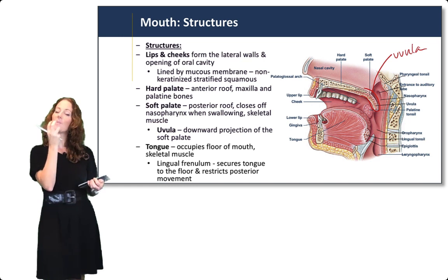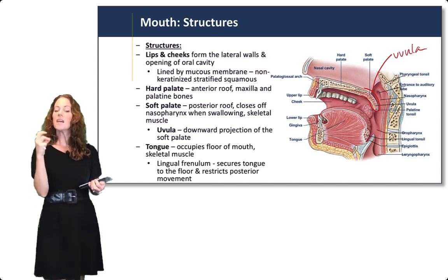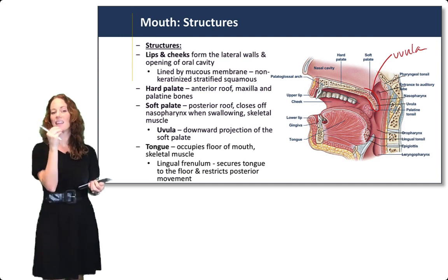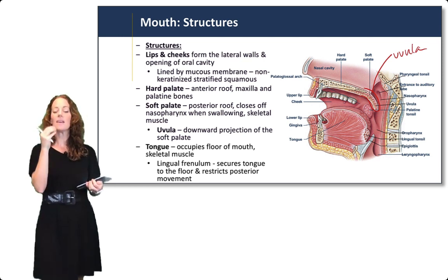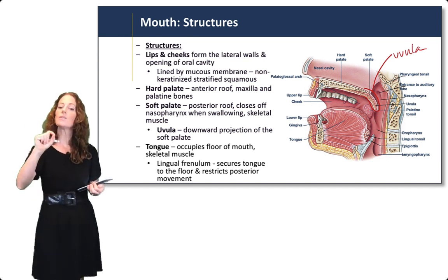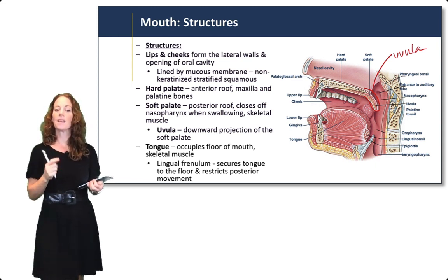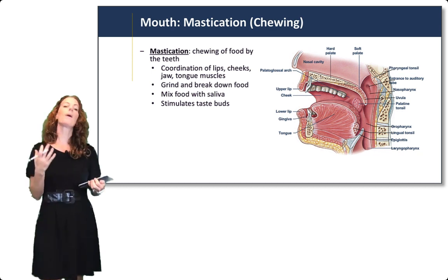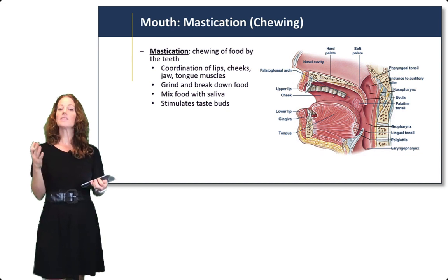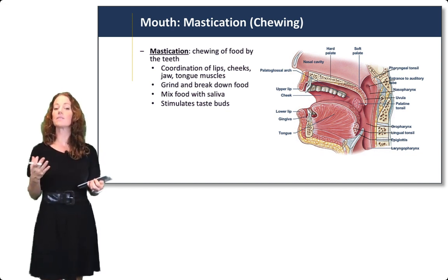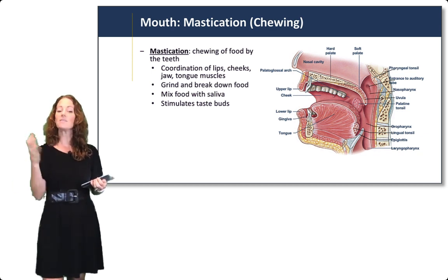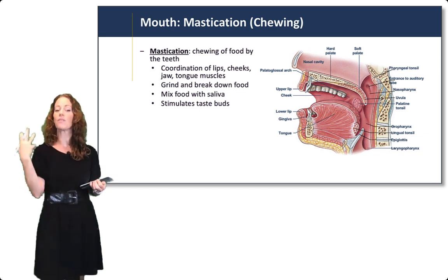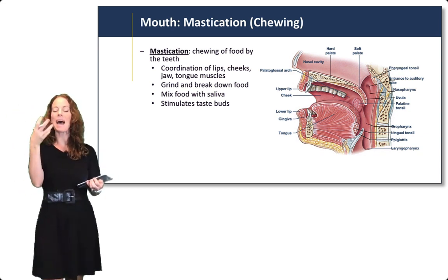The tongue is a large skeletal muscle occupying the floor of the mouth. It helps to move food around the oral cavity as it's being mashed and broken down by the teeth, and also pushes food back during swallowing. It's secured to the floor of the mouth through the lingual frenulum, which also restricts posterior movement of the tongue. The process of chewing is called mastication — a coordination of the lips, cheeks, jaw, and tongue muscles to grind and break down food. Saliva mixes with food to stimulate taste buds and lubricate the food mass.